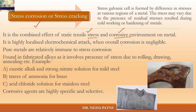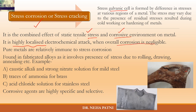Why does it corrode? Because there will be an electrochemical attack — there will be formation of a stress galvanic cell, because there will be a difference in stress at various regions. The level of stress will vary with respect to the presence of residual stress, and that is how it is a highly localized attack. It will only happen where the area is under stress, while the rest of the area will have no corrosion. So overall corrosion is negligible, but it will happen only to the affected area.